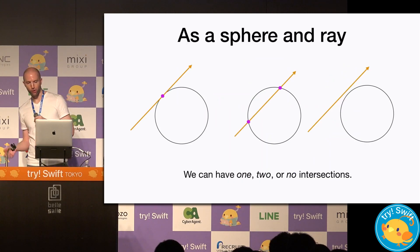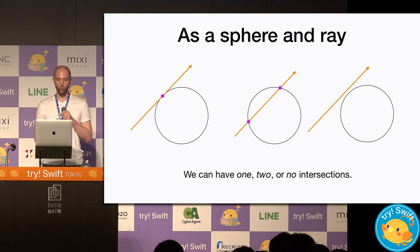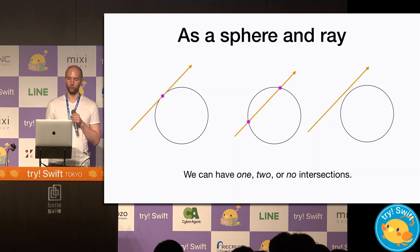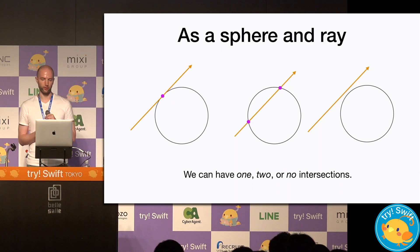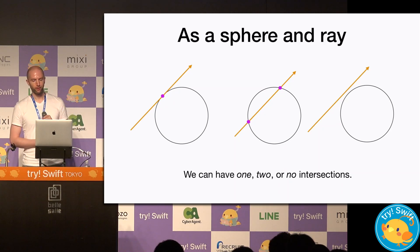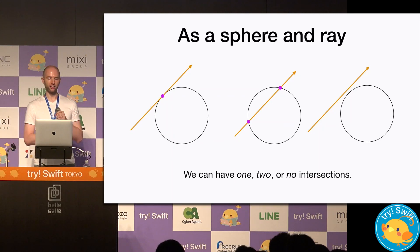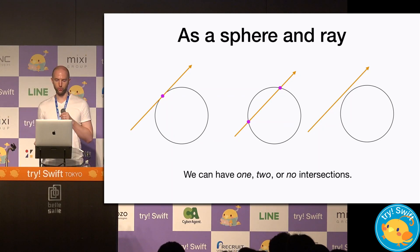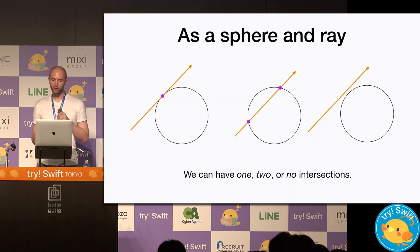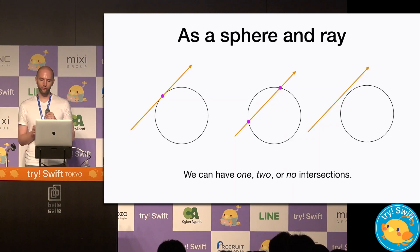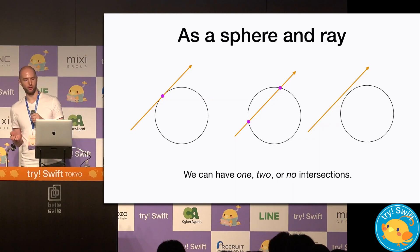In terms of a ray, we can also have one, two, or no intersections with our sphere. The ray can touch the surface of the sphere, it can intersect right through it, or not touch it at all. So now we can see how the math of a quadratic models what is happening here.